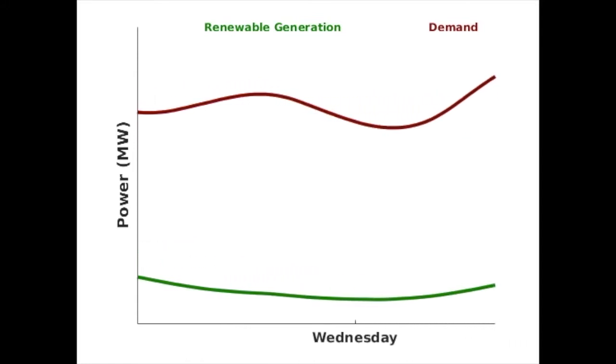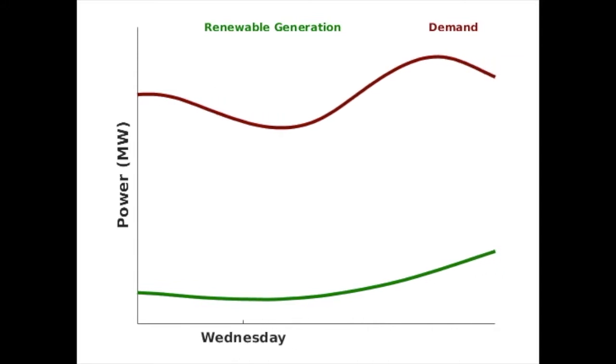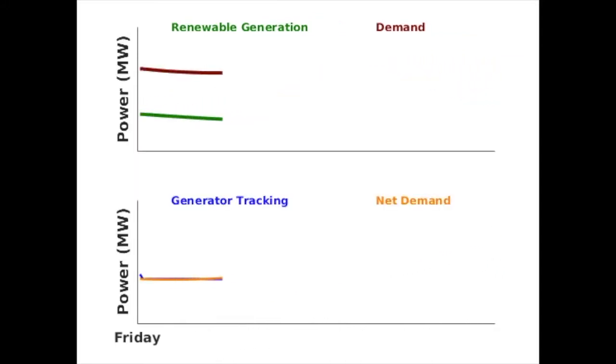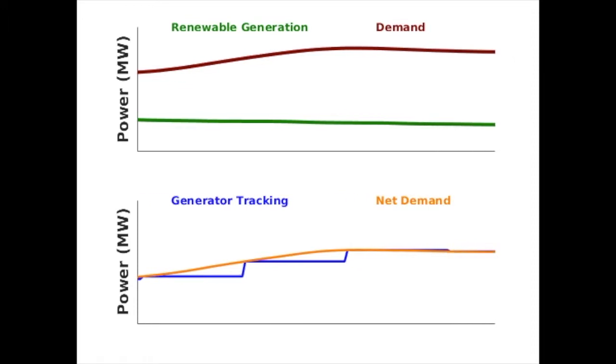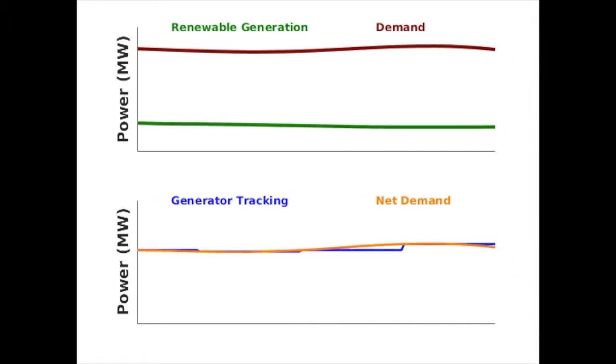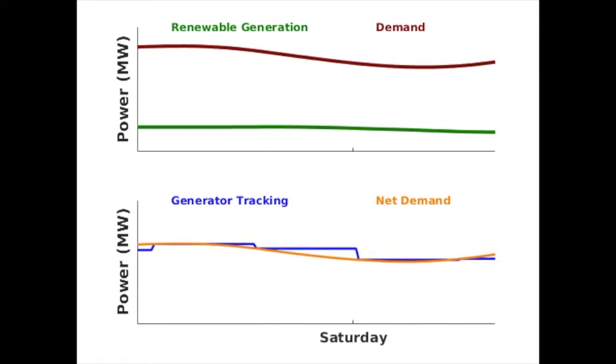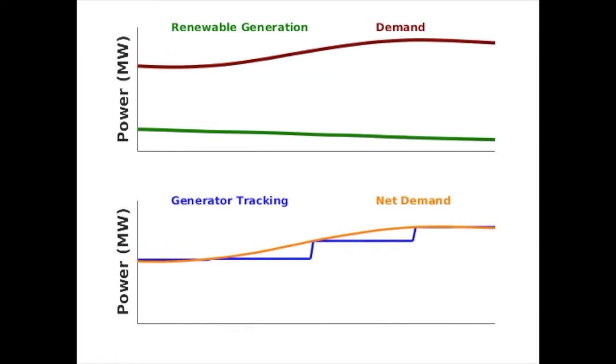Traditionally, the slow varying portion of the net demand is supplied with fossil fuel based generators. The rest of the mismatch is quickly varying and traditional generators cannot ramp up and down that quickly. Other resources are needed, such as batteries.